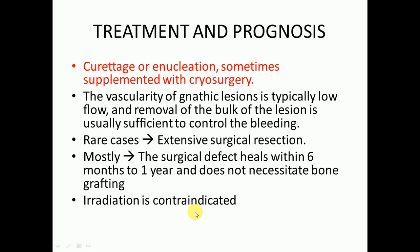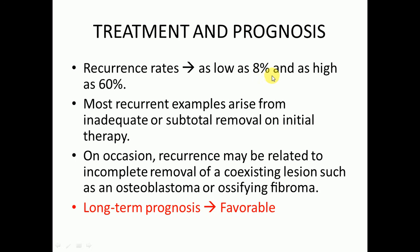In both cherubism and aneurysmal bone cyst, irradiation is not recommended. The recurrence rate is variable — as low as 8% and as high as 60%. Most recurrences arise from inadequate or subtotal removal on initial therapy; on occasion, recurrence may be related to incomplete removal of a coexisting lesion such as an osteoblastoma or ossifying fibroma. The long-term prognosis is favorable.